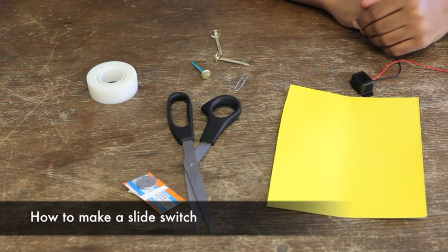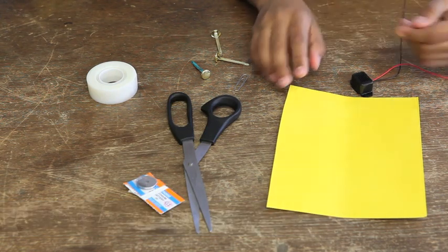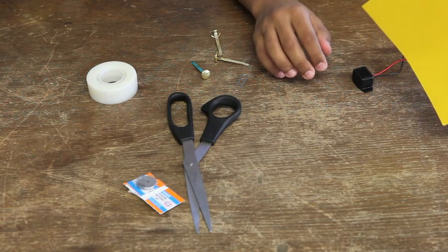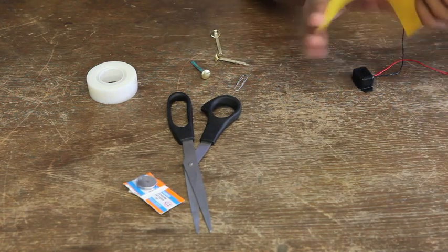Now we're going to show you how to make the slide switch. First, you take the cardstock paper and fold it in half.